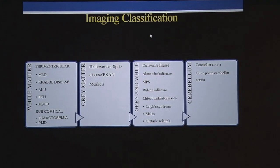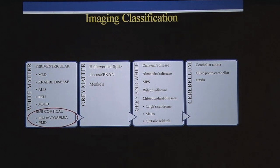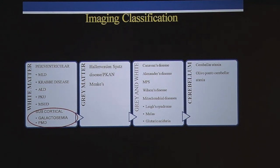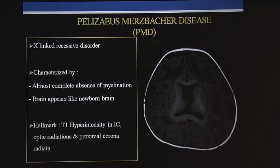Those were five conditions with predominant affection of periventricular white matter. Now we will look at two conditions where there is subcortical white matter affection: these are Galactosemia and Pelizaeus-Merzbacher.